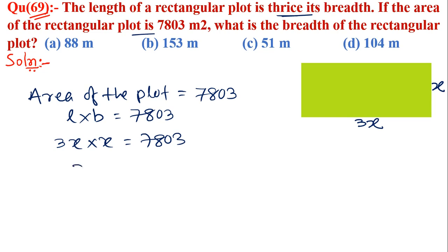So 3x times x equals 7803. 3 times x squared equals 7803. x squared equals 7803 divided by 3, so x squared is 2601.